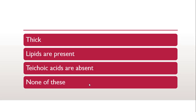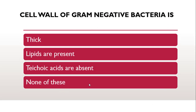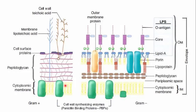The first question is: the cell wall of gram-negative bacteria is — whether it is thick, whether lipids are present, whether teichoic acid is absent, or none of these. The correct answer is that teichoic acid is absent.